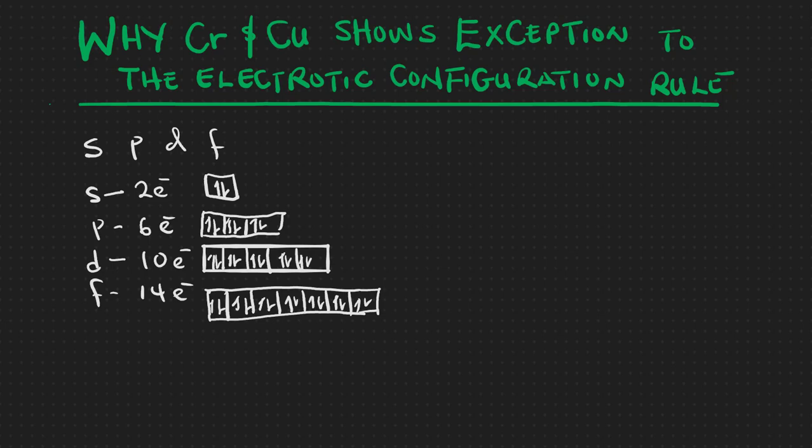Another important thing to note is that these orbitals are arranged according to their energy level. Orbitals with lower energy are filled first. The easiest way to arrange them by increasing energy is by writing: 1s, 2s, 3s, 4s, down to 7s.